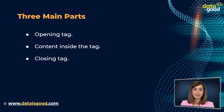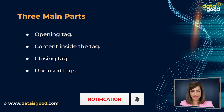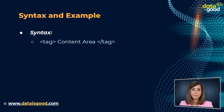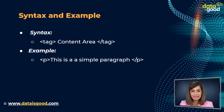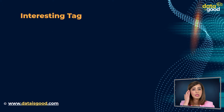HTML tags contain three main parts: opening tag, content inside the tag, and closing tag. Apart from this, there are a few HTML tags that are unclosed tags, which means you don't need a closing tag. An example would be: <p>This is a simple paragraph</p>. Here, P is an HTML tag that stands for paragraph. You can see the opening and closing tags and text content between them.